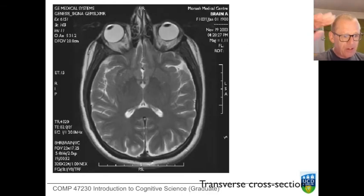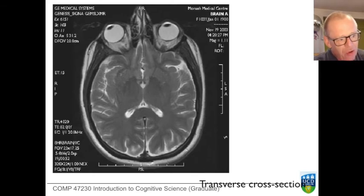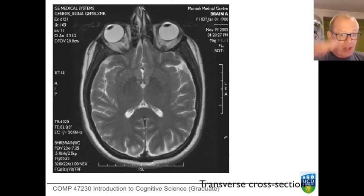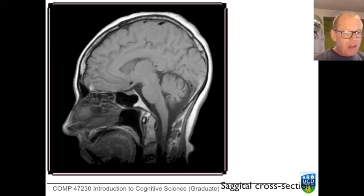This here is a transverse section through the head — you're looking at the brain, you can see the eyeballs. When you acquire an image in this fashion you actually acquire a volumetric image, so this is one slice through, and you can represent other slices. You can slice the brain this way or this way — this is a transversal slice, and here is a sagittal slice.